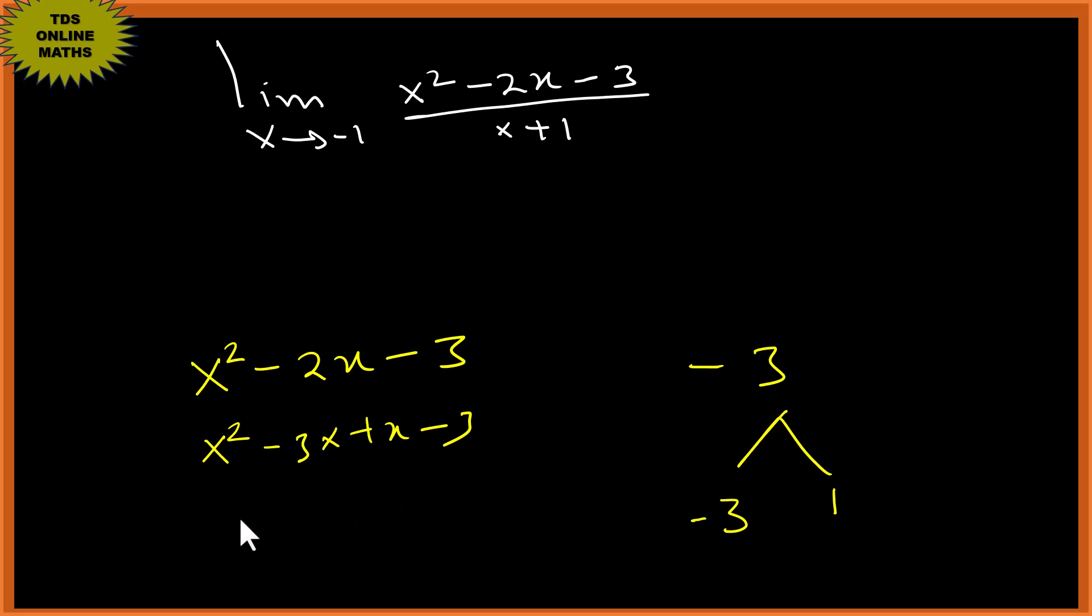minus 3. Factor out x from (x minus 3), plus 1 times (x minus 3), so we have (x plus 1)